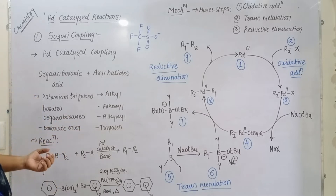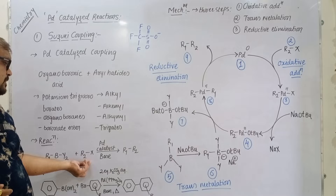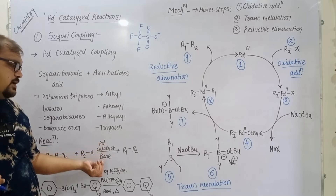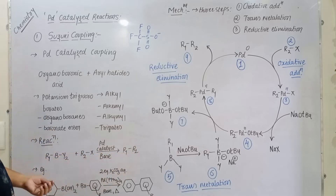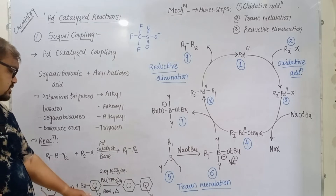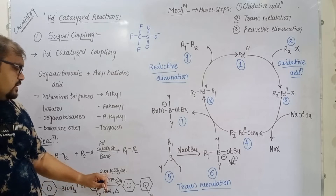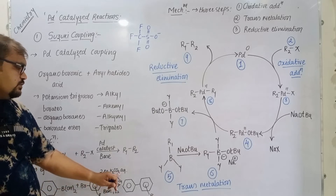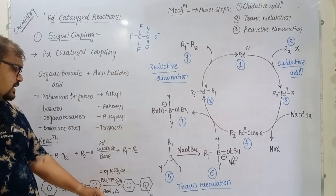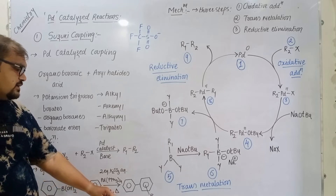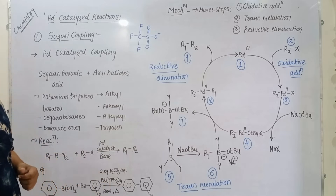In the Suzuki coupling reaction, a boronic species reacts with a halide in the presence of a palladium catalyst and base to give the desired product with a carbon-carbon bond. For example, a boronic species reacts with a substituted halide in the presence of two equivalents of K₂CO₃ aqueous solution, tetrakis(triphenylphosphine)palladium complex, and benzene as solvent at the required temperature to give the carbon-carbon bond formation product.